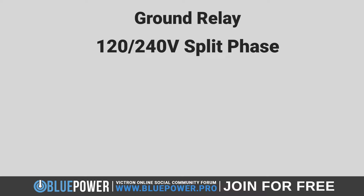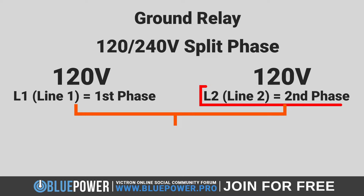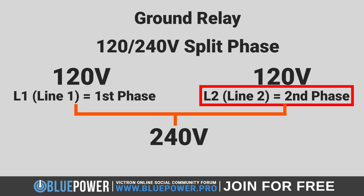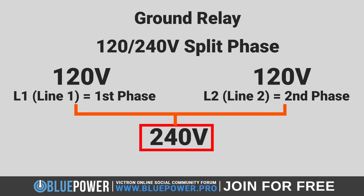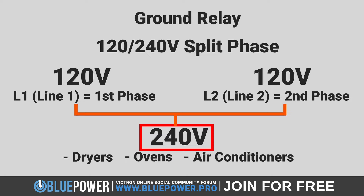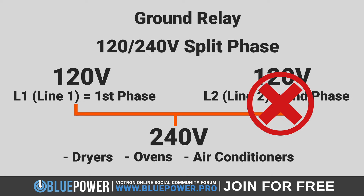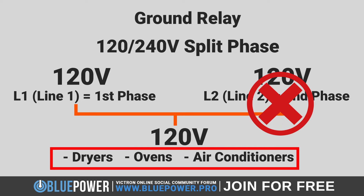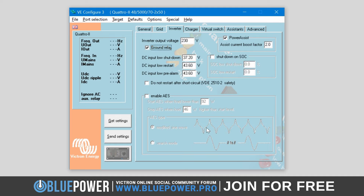For inverter models that operate on 120–240 volt configurations, often referred to as split phase and commonly used in North America, the L2, also known as Line 2, represents the second phase. This phase is critical as it provides part of the 240 volts needed to operate high-power appliances such as dryers, ovens, and air conditioning units. If the ground relay were deactivated, it might lead to a disconnect or improper functioning of the L2 phase, affecting the system's ability to properly deliver the necessary 240 volts. It is therefore best practice to always keep the ground relay enabled, especially if your system includes an earth leakage circuit breaker.